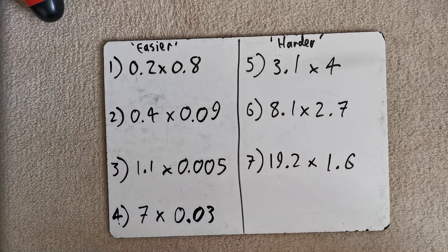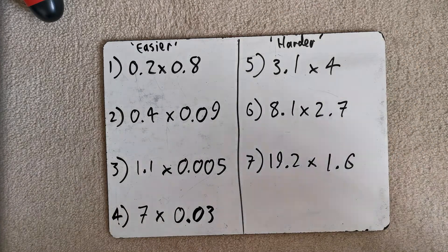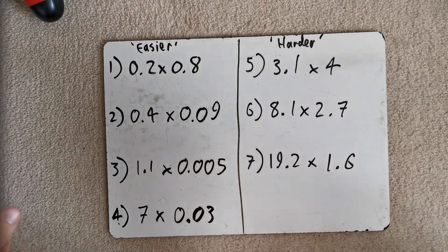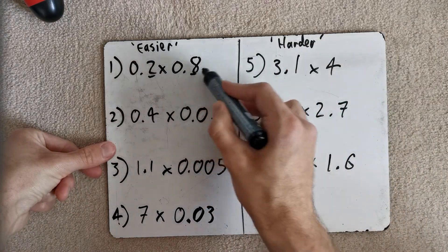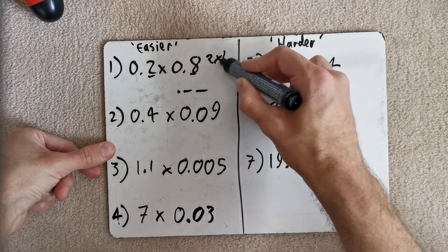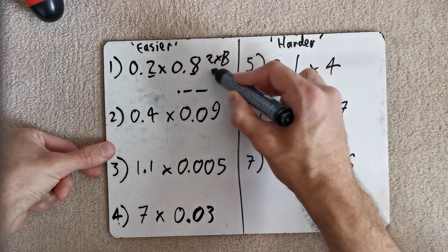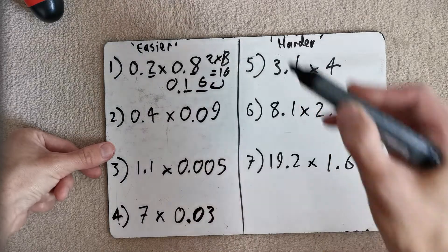Okay. Right. So, let's go through. I might go through the first lot just on the boards that they're on because they're relatively straightforward. Okay. So, 1. 2 decimal places in the question. 2 in the answer. 2 times 8 is 16. 2 at the end. Be 0.16.